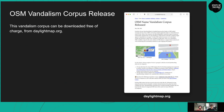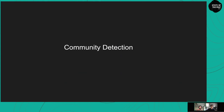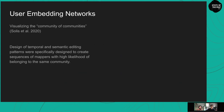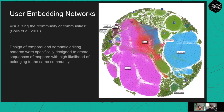I'll hand it back to Jennings to talk about applying OSM user embeddings to automated community detection. In addition to vandalism detection, OSM user embeddings can be used for automated community detection within OSM. OSM is comprised of many distinct groups of mappers — considering each group a different sub-community makes OSM a community of communities. The temporal and semantic editing patterns were specifically designed to create sequences of mappers with a high likelihood of belonging to the same community, and the resulting user embeddings can group these communities appropriately by similarity.